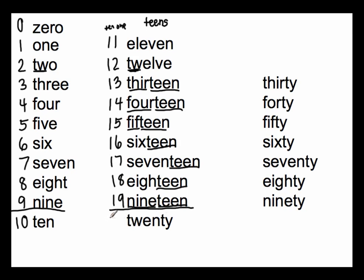Now we move on to the next word after nineteen, which is twenty. A word that ends in T-Y tells you the number of tens that you have. So T-Y will tell you how many tens you have. In this case, we have T-W again — twenty. T-W goes back to two, so that tells us we have two tens. We put a two in the tens place and a zero in the ones place because we only have two tens and nothing more. Thirty means three tens.